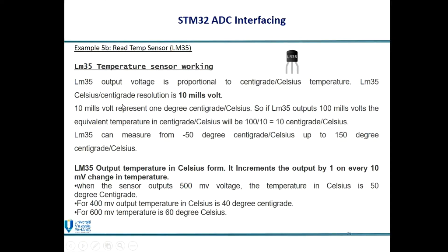The LM35 output is proportional to the centigrade or Celsius temperature. The resolution is 10mV per degree — 10mV represents 1 degree Celsius. So if the LM35 outputs 100mV, the equivalent temperature is 100 divided by 10, which equals 10°C. This sensor can measure from negative 55 degrees up to 150 degrees.